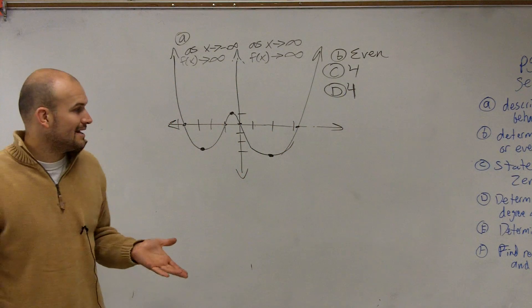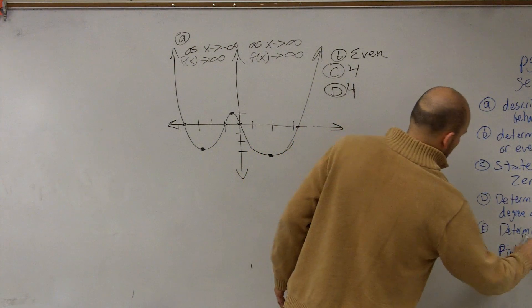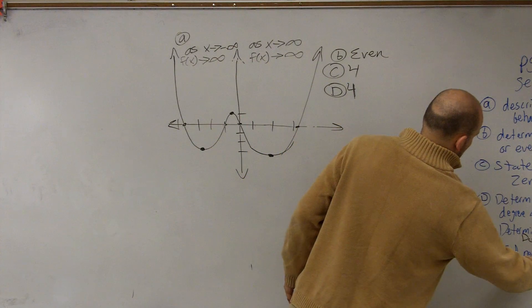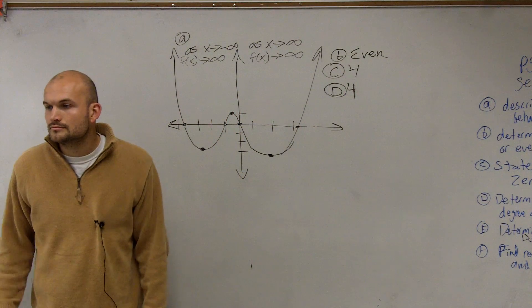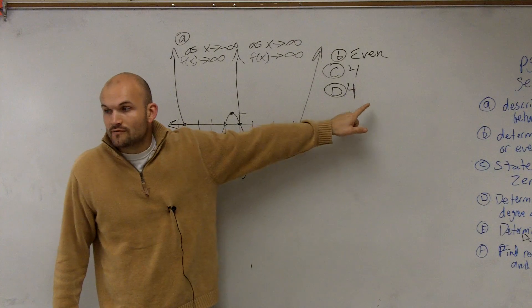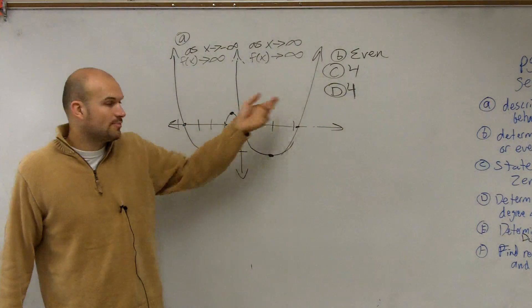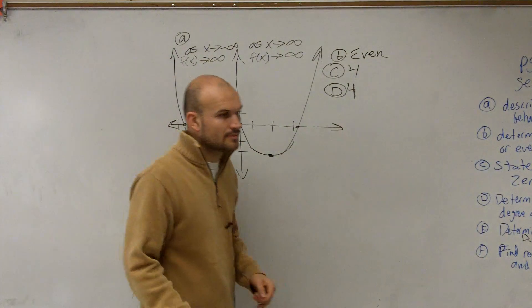So the smallest degree that my function can be is four. Now I need to determine the domain and range. Oh, I didn't write that in there. Determine range and domain. Wait, if the turning point is zero, is it just four to the rest? No. The degree is four. So if the degree is four, your turning points is three, because turning points is n minus one.